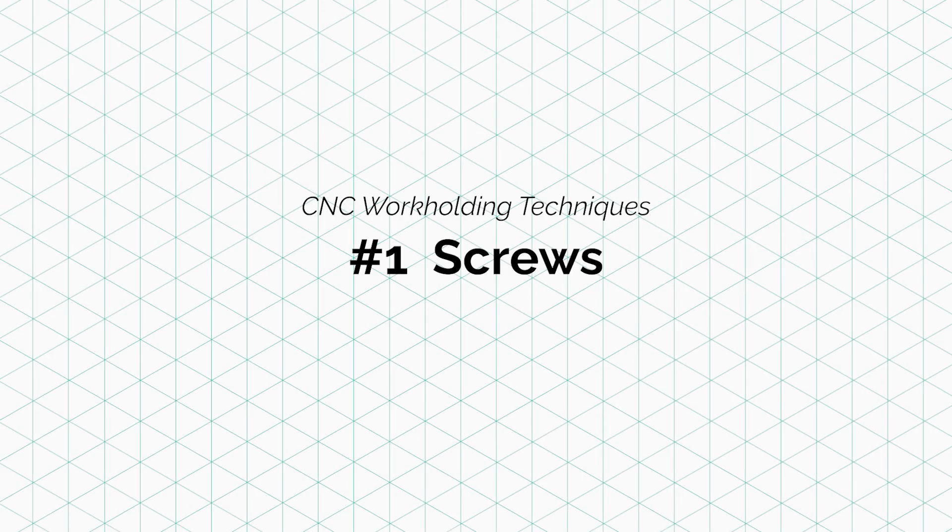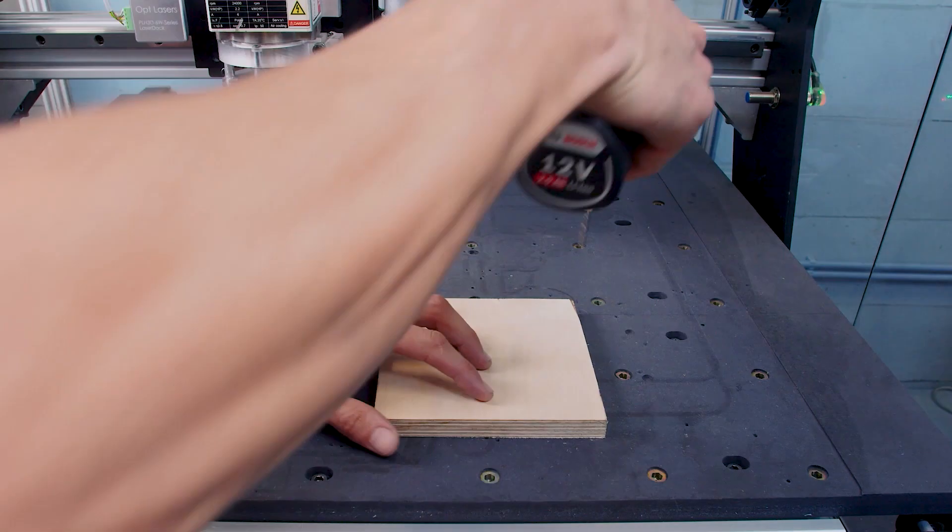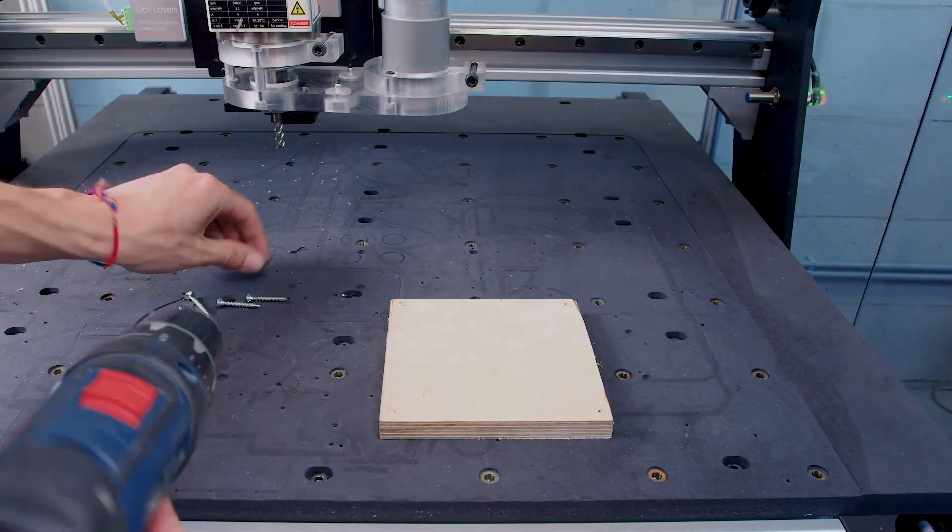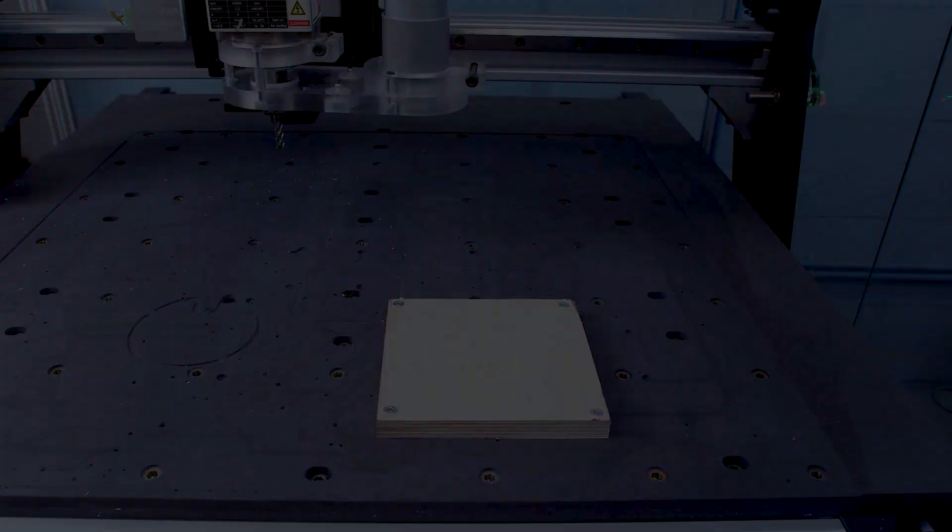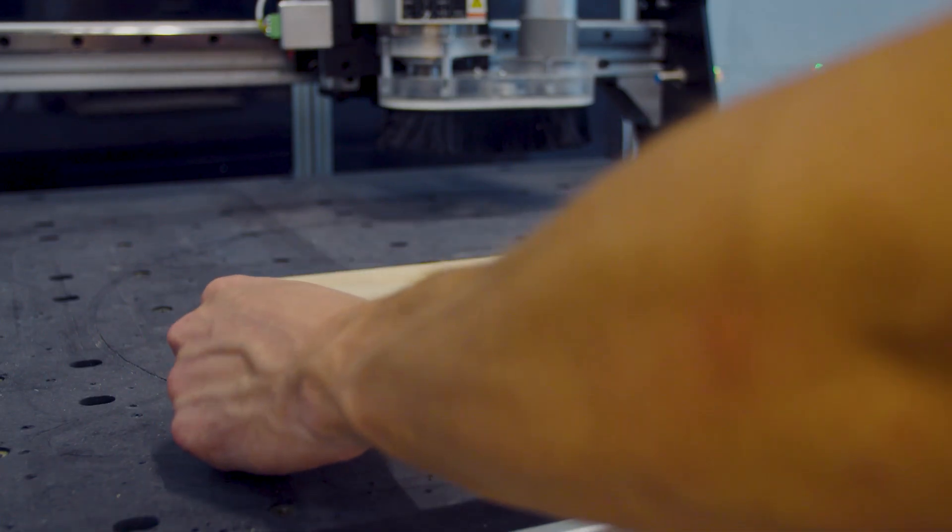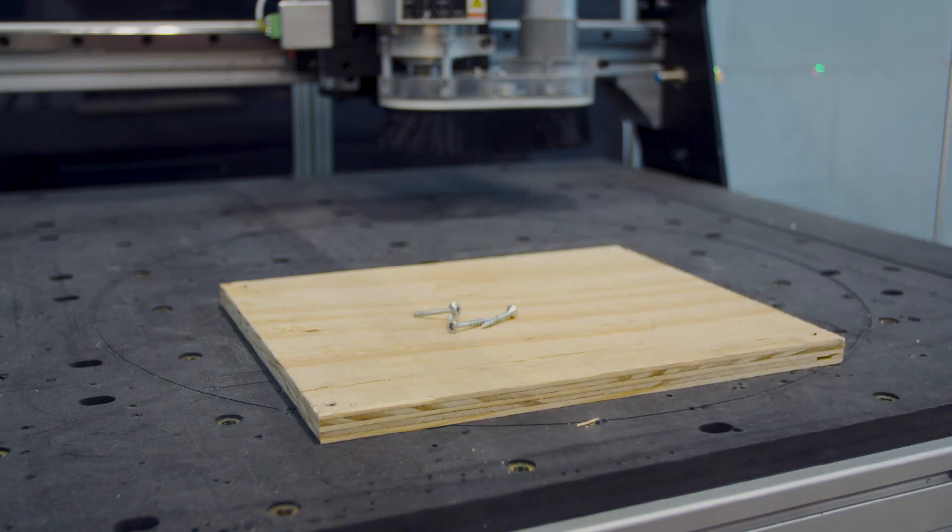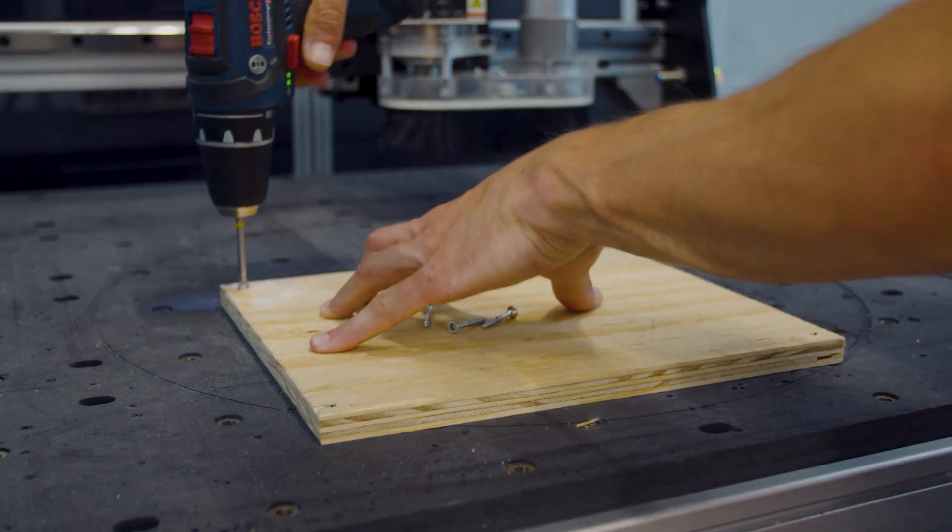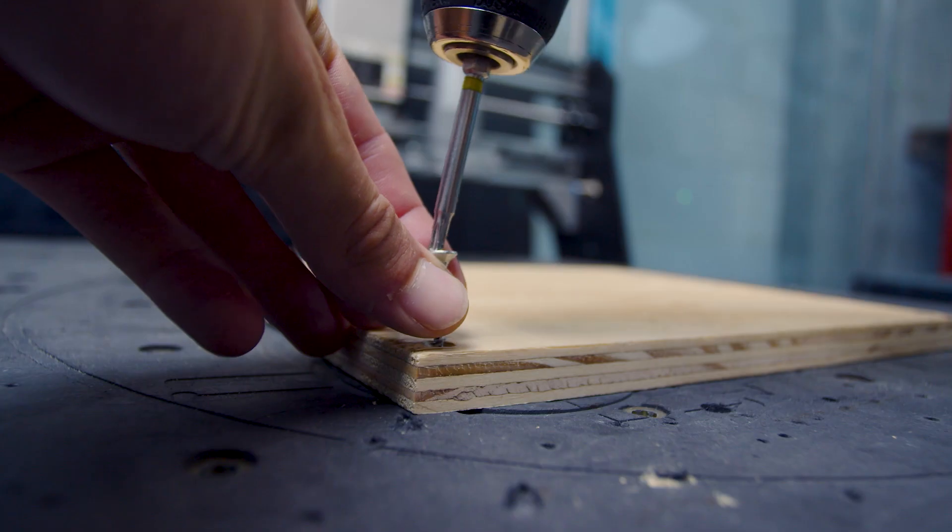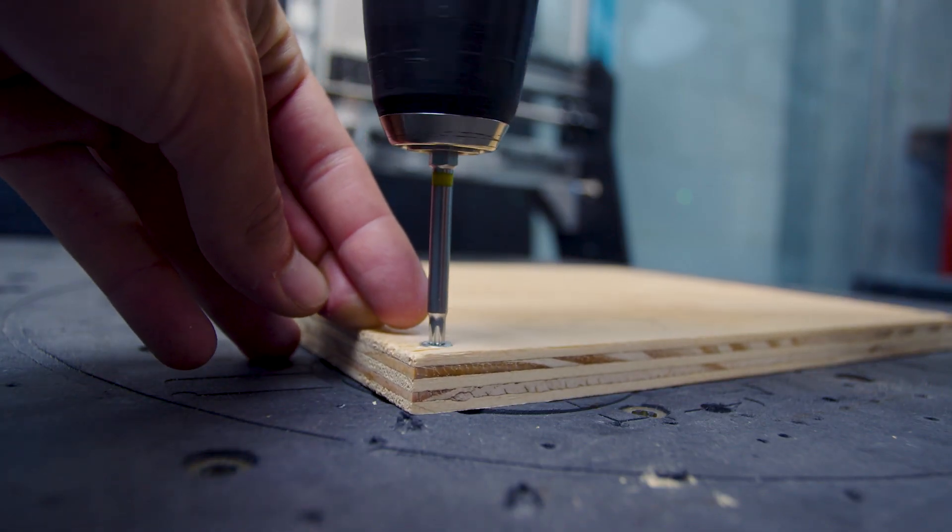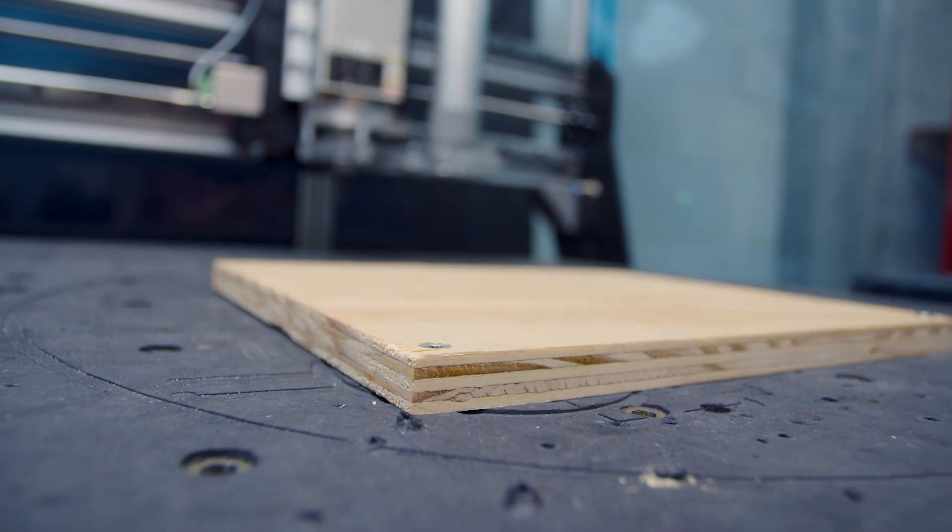Technique number one: the screws. Attaching a workpiece on your spoilboard with screws doesn't really need any explanation, but it's a common technique so it's worth comparing it to the others. The pros are it is one of the easiest and fastest ways to fix a workpiece while also being very cheap and ergonomic. The two main advantages are that this fixing system is strong and secure and that it allows you to set the fixing points wherever you need.